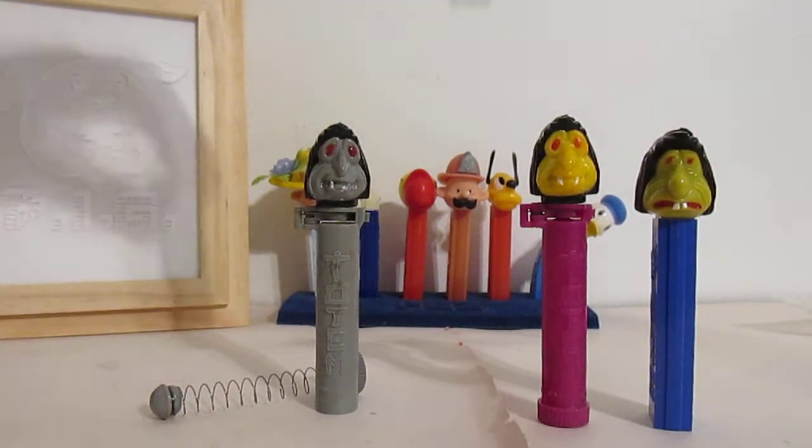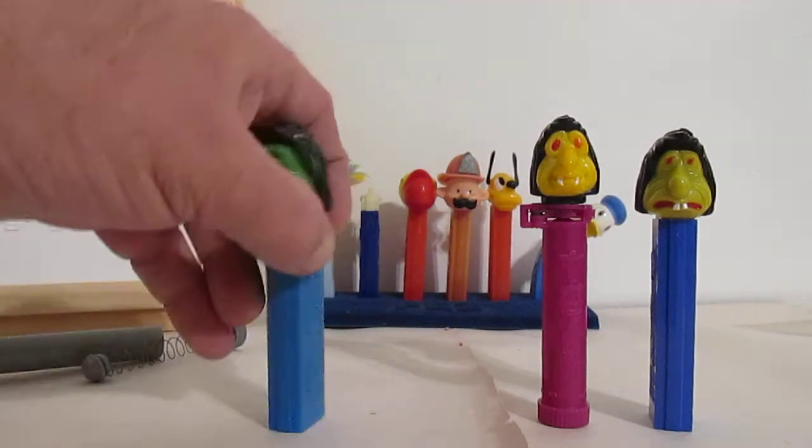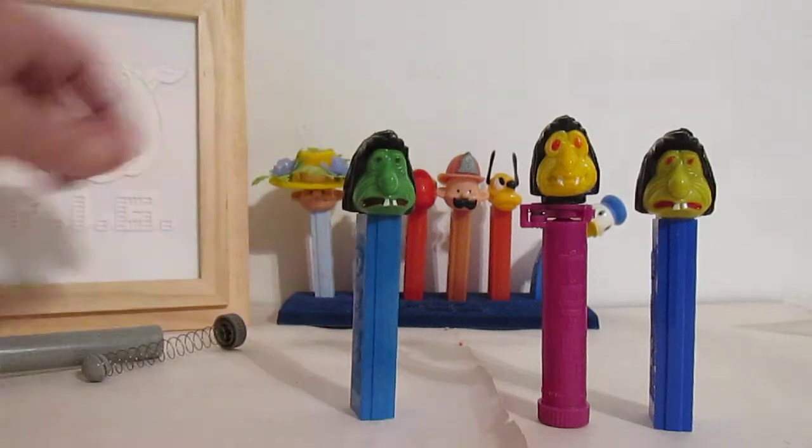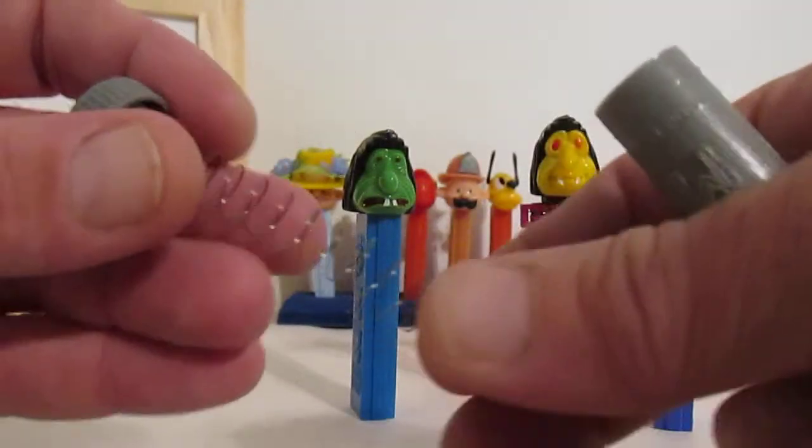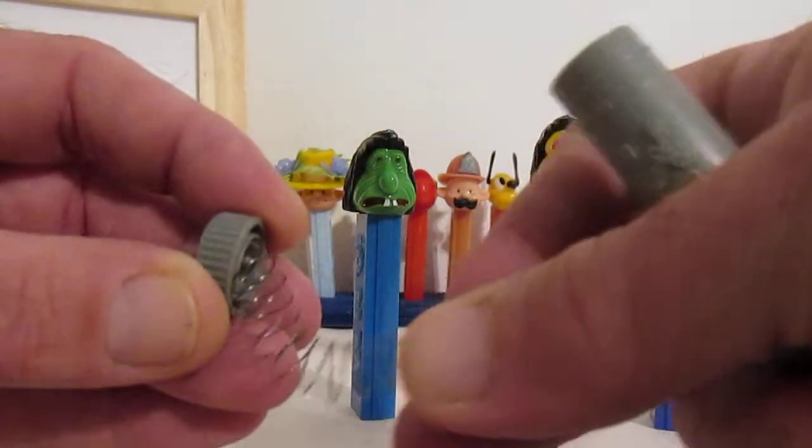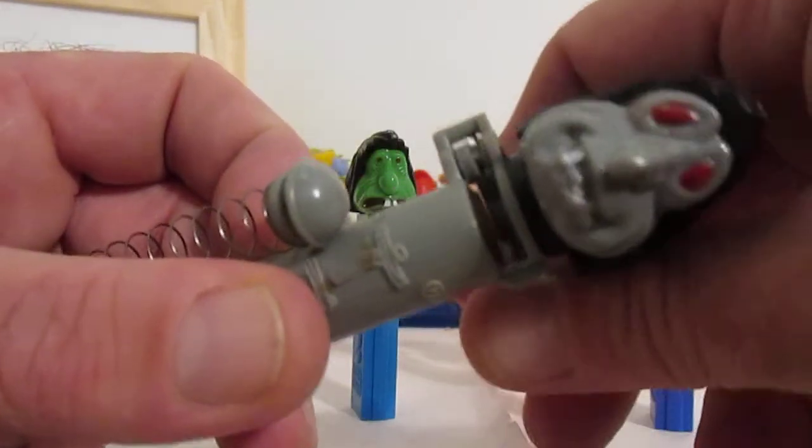The totem candies. They have round candies that would be dispensed from... Way to go Mr. Ugly. So you would load your candy in here and here you see the spring mechanism. It would actually come together and then push the candy up through this neck piece here.